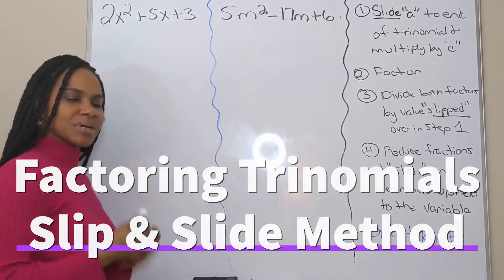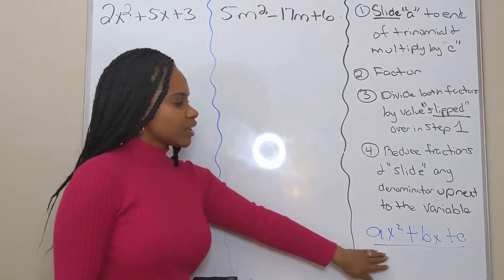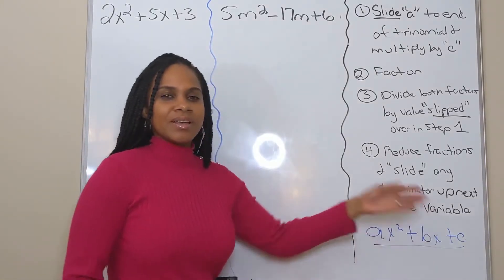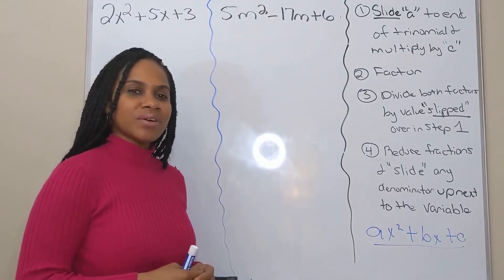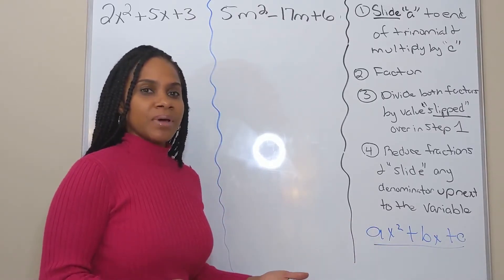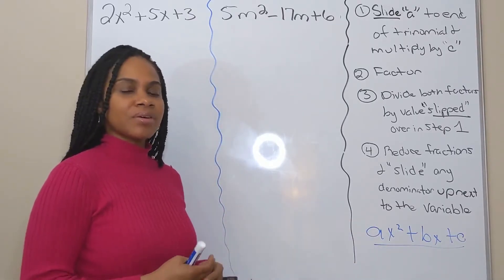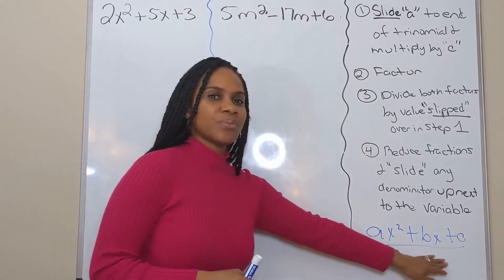All right, so in this video, I'm going to show you how to factor expressions in the form of ax squared plus bx plus c using a method called the slip and slide method. Now, I do have another video showing you how to factor expressions in this same form by grouping, but I'm just going to show you another method or another way to factor expressions in this form right here.